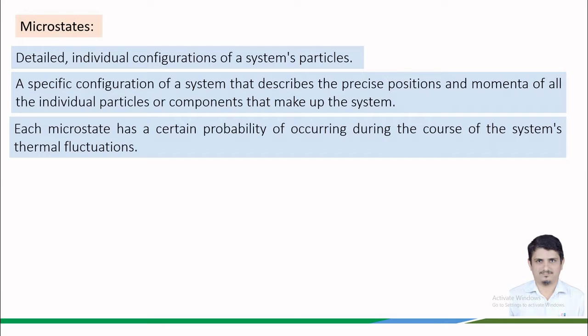A microstate refers to the specific arrangement of particles and their corresponding energies within a system at a given instant. It encapsulates the position, velocities and energy levels of every constituent particle. The number of microstates that a system can have is often very large, even for relatively small systems. Microstate gives microscopic details of a system.